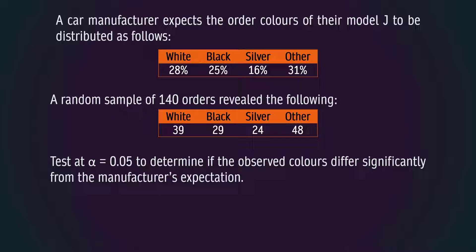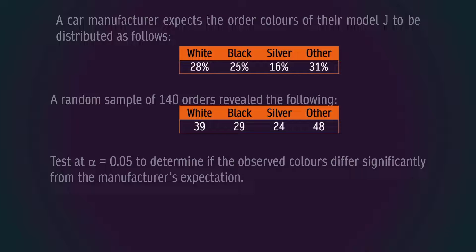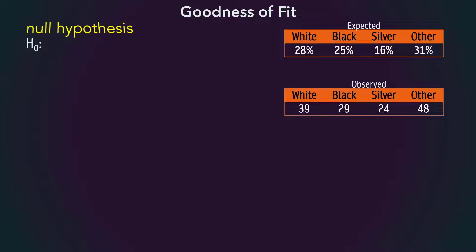The expected proportions in the first table would be the null hypothesized proportions. In essence, we can write the null hypothesis as p1 equals 0.28, p2 equals 0.25, p3 equals 0.16, and p4 equals 0.31.